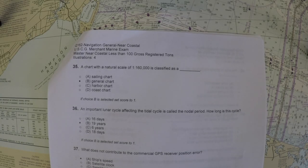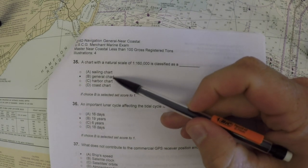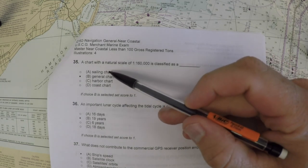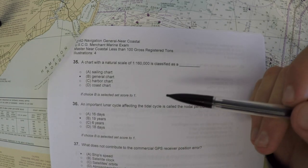Moving on with our exam, question number 35. A chart with natural scale of 1 to 160,000 is classified as what? You can see from the answers here there's a couple different types of chart titles: sailing charts, general, harbor, and coastal charts.